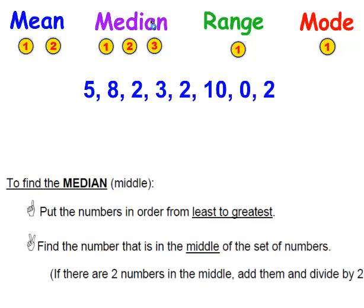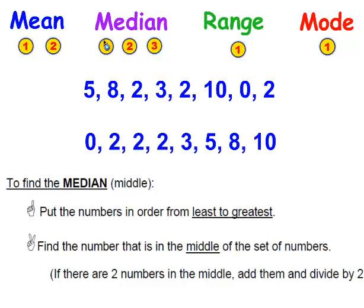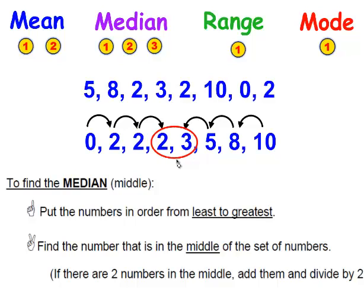Now we're going to find the median. To find the median, the first step is to put the numbers in order from least to greatest. Then you're going to find the number that's in the middle of the set of numbers. If you look at this, there are two numbers in the middle. When you have two numbers in the middle, you add them up: 2 plus 3 is 5, and you divide that by 2. So I take the sum of those two numbers, divide it by 2, add the decimal point, and the median is 2.5.